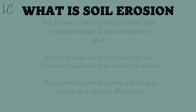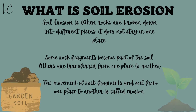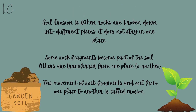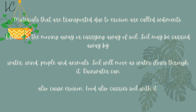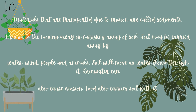What is soil erosion? Soil erosion is when rocks are broken down into different pieces. It does not stay in one place. Some rock fragments become part of the soil, while others are transferred from one place to another. The movement of rock fragments and soil from one place to another is called erosion. Materials that are transported due to erosion are called sediments. Erosion is the moving away or carrying away of soil.